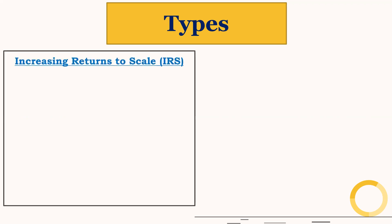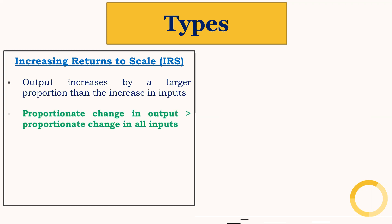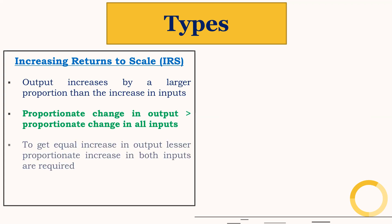Let's understand the types of returns to scale. First is increasing returns to scale. Here output increases by a larger proportion than the increase in inputs. Therefore, proportionate change in output is greater than proportionate change in all inputs. In other words, to get an equal increase in output, a lesser proportionate increase in both inputs is required.